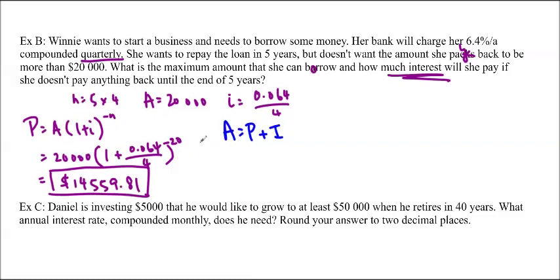So, we can just fill it into this formula. $20,000 is equal to $14,559.81 plus I. You just subtract them off, and you get I is equal to approximately $5,440.19. At least that's what my calculator tells me.